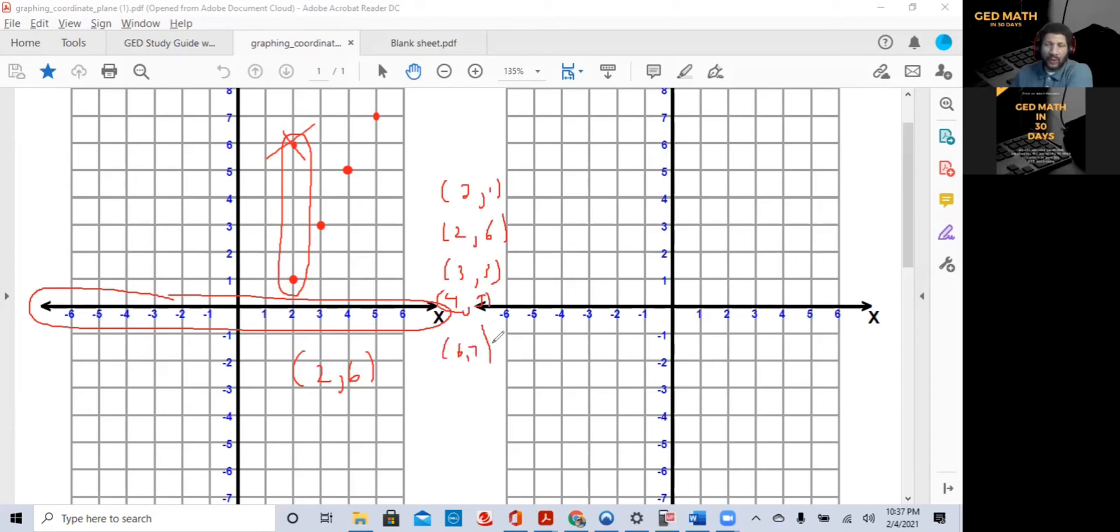Again, once you put the ordered pairs in a vertical fashion like this, it's the same as a table. So, here's your x, there's your y's. We have two values of x. We have different y's. It's not a function. One of these points must be removed. So, that's how you tell if a function is valid, using a table, a graph, and ordered pairs.